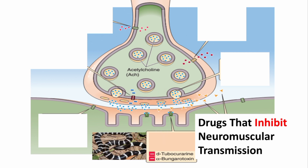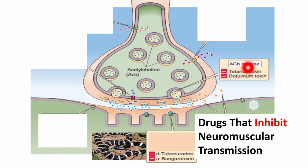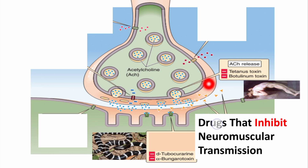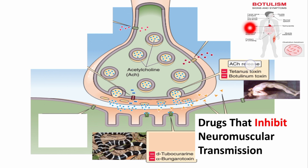The second subcategory includes toxins such as tetanus toxin and botulinum toxin. These toxins prevent the release of acetylcholine from the axon terminal. Tetanus toxin causes tetanus, and botulinum toxin causes botulism, which is a very severe and lethal form of food poisoning.